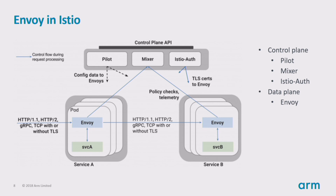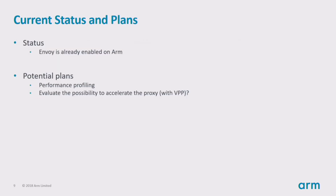This is how Envoy is used in Istio. Currently, Envoy is already enabled on ARM. Potential plans include performance profiling and evaluating the possibility of accelerating the proxy. Whether VPP is the right choice is still under investigation.